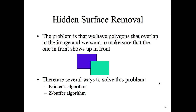Moving to hidden surface removal: taking surfaces that are invisible and removing them. The problem is that polygons overlap in an image, and we want the front one to show in front while the one behind doesn't get rendered. There are two most popular solutions: the Painter's Algorithm and the Z-Buffer Algorithm. The Z-Buffer Algorithm is supported by OpenGL. Z-buffering is a bit better but more time-consuming.